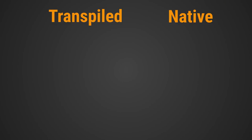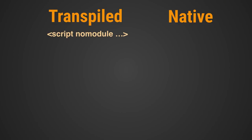Surprisingly, another solution is to do both — include both the native and the transpiled version of your code. The transpiled version gets the nomodule attribute on the script tag, while the module version must have type equals module. Browsers that support type equals module also ignore script tags with a nomodule attribute. So in this case, only one of the two versions will be loaded.